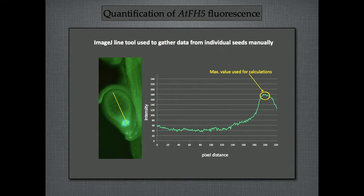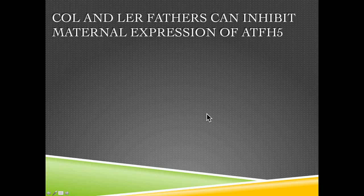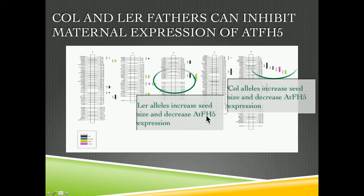What we can also do in a separate set of crosses is dissect them and look at the expression of this maternally expressed gene and see how the different recombinant inbred lines affect that expression. Together we map these, and what we found were two very strong QTLs where Landsberg alleles were able to increase seed size plus decrease that ATFH5 expression. So the father having an effect on this expression of this maternally expressed gene correlated with seed size.